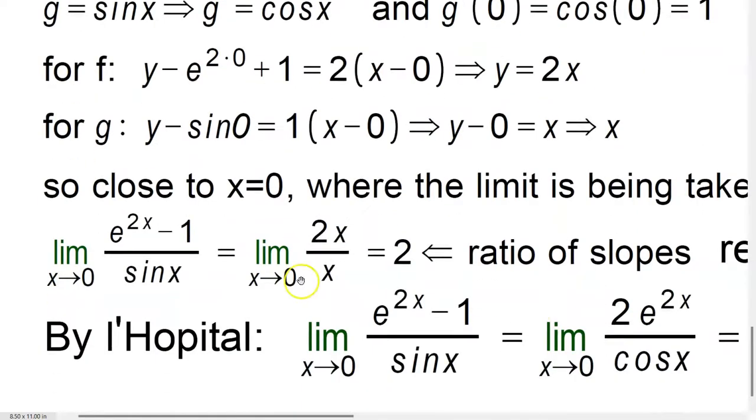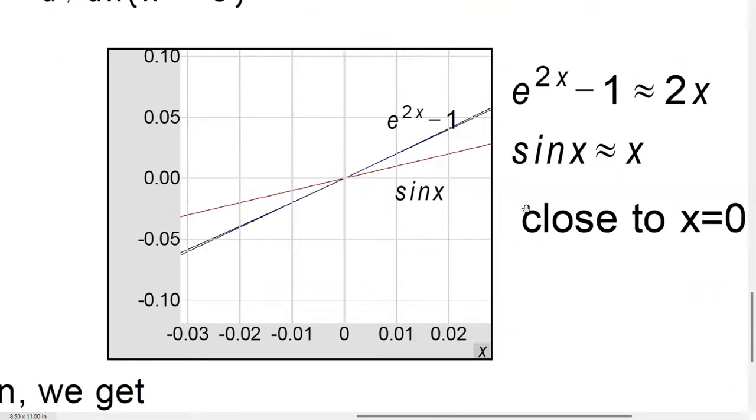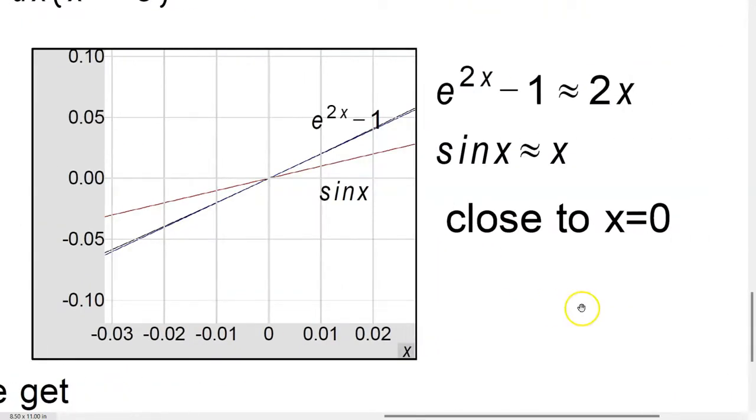But now remember something. These are valid around 0 where the expansion is being done, so look at this graph very carefully. Look at the horizontal axis. It goes from negative 0.03 to 0.02, so very small range. And look at the vertical axis. It goes from negative 0.1 to positive 0.1, a very small range.